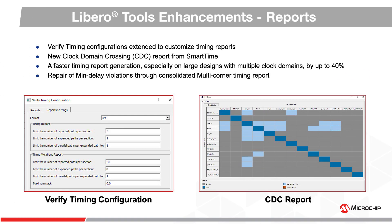This slide details the improvements to timing reports. This release enables custom timing reports using the Verify Timing Configuration option. A new clock domain crossing report option is introduced in SmartTime after generating place and route, plus a 40% runtime improvement on timing report generation. The consolidated multi-corner timing report supports min-delay repair violations.